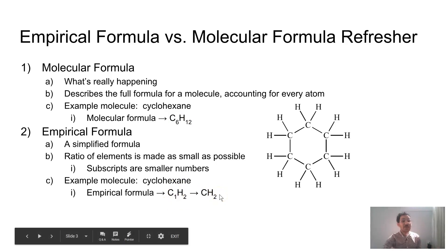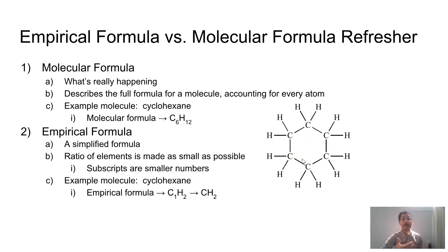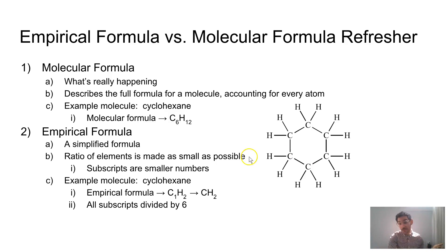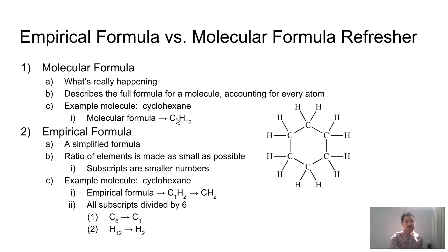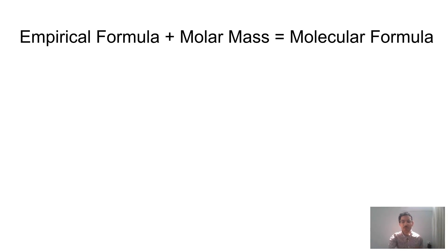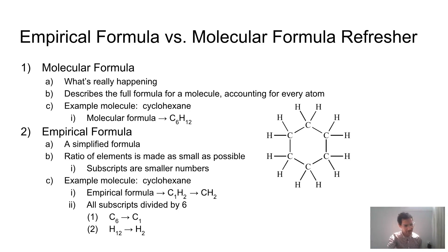The empirical formula for cyclohexane does not really give us a full picture of what's going on with that molecule. Sometimes we only get empirical formulas. I divided all my subscripts by 6, so C6 became C1 and H12 became H2. We would use an empirical formula if you had a new chemical and sent it out for analysis — you would only get back an empirical formula. Generally not as useful though.